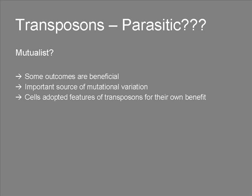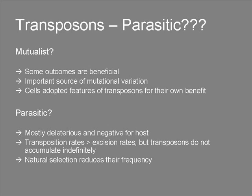Last but not least, it is believed that some features of transposons, such as the reverse transcriptase, were adopted by the host cells for their own benefit. However, most effects of transposons are harmful to the host, which would mean that transposons are parasitic. They often disrupt essential genes by inserting randomly into these. Another fact that speaks for the parasitism is that transposition rates are much higher than excision rates. But still, transposons do not accumulate indefinitely, because natural selection selects against them and reduces their frequency — and natural selection does that only when something is harmful to the host. So, transposons are harmful and are called parasitic.